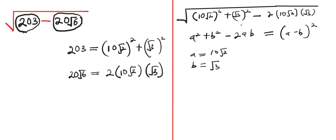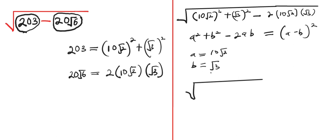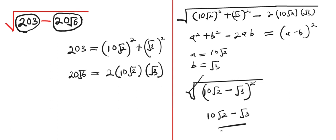So we are going to rewrite this in the form of a minus b all squared. Wherever we have a, we insert 10 root of 2, and wherever we have b, we insert root of 3. So we have square root of 10 root of 2 minus root of 3, all squared. The square root will cancel the squared, so we have 10 root of 2 minus root of 3. This becomes the final answer.